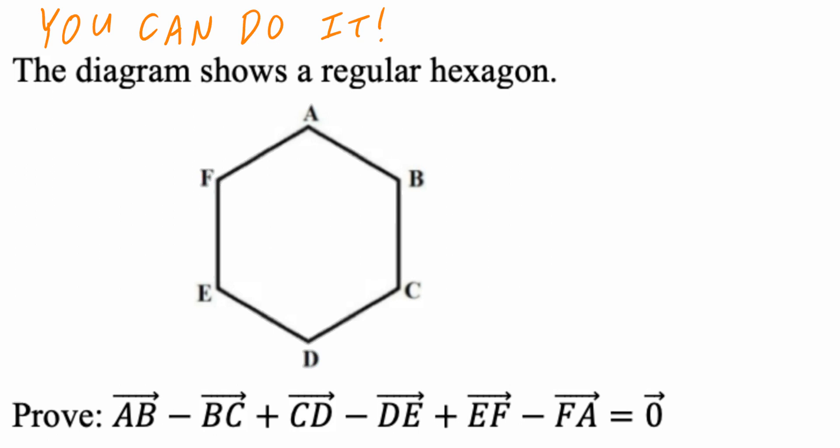Hi, everyone. Let's take a look at the following example. The diagram shows a regular hexagon. Prove that vector AB minus vector BC plus vector CD minus vector DE plus vector EF minus vector FA equals the zero vector.